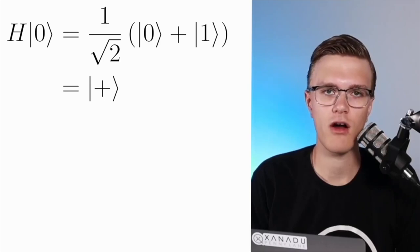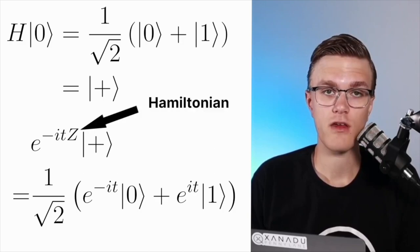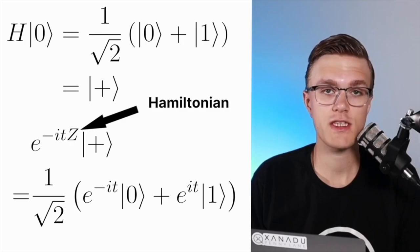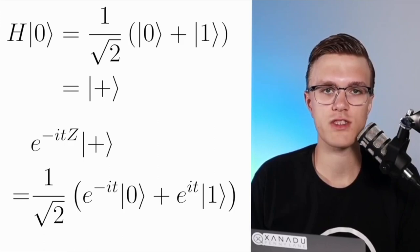So with the goal of finding the ground state of this Hamiltonian, what we'll do next is prepare a qubit in the uniform superposition state by applying a Hadamard gate on the zero state. The next operation we'll apply is a time evolution on our state under the Hamiltonian in question for some time that we don't know yet. Since our Hamiltonian is the Pauli-Z operator, this time evolution operator is just a Pauli-Z rotation with a negative rotation angle. All this does to our uniform superposition state is apply some phases on the zero and one states.